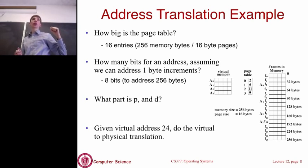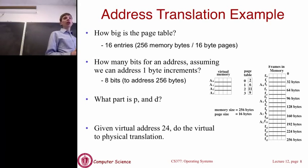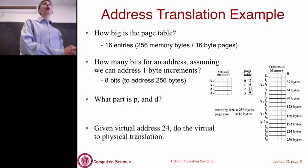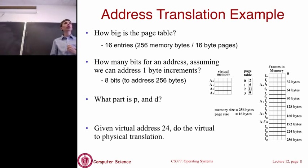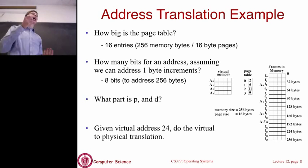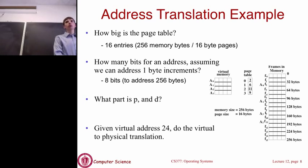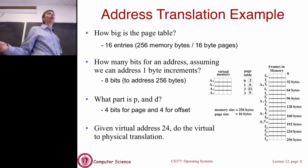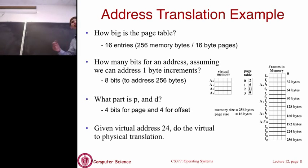Now we want to encode both the page number and the offset into that 8-bit address. We have 16 pages, so we need 4 bits — 2 to the 4th equals 16 — to encode the page number. For the offset, we also need 4 bits. First, it's an 8-bit address, so if we use 4 for the page, 4 remain for the offset. Additionally, the page size is 16 bytes, so we need 4 bits to index an offset into a 16-byte page. So 4 bits tells us which of the 16 page table entries, and 4 bits tells us the offset into that specific page.